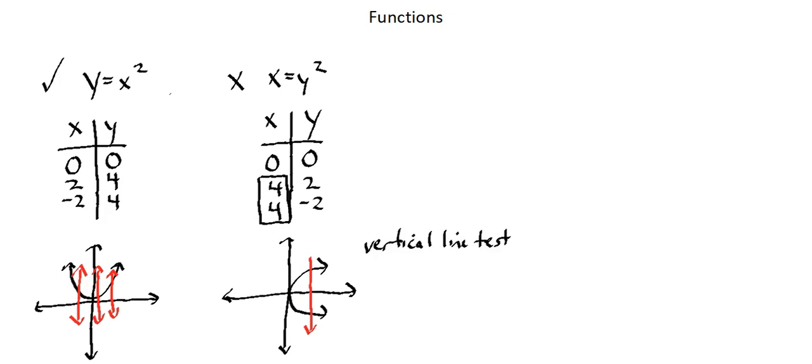Now let's look at some function terminology and notation. We refer to the inputs of a function as the function's domain, and we refer to the resulting outputs as the function's range.